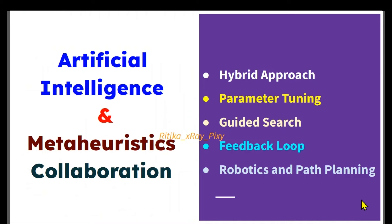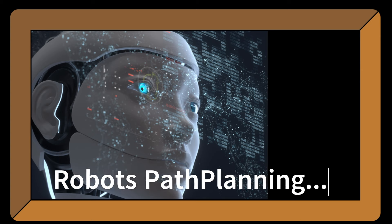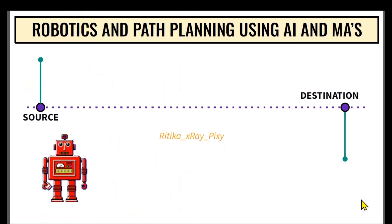In robotics and path planning, artificial intelligence can help detect challenges and changes in the environment, allowing meta-heuristics to create flexible and effective paths for robots. Suppose we have a robot that needs to be trained to work in a specific area. We need to train it to be aware of its surroundings and carry out tasks effectively. The goal is finding the best path for the robot to move from a starting point to a destination while avoiding all obstacles.